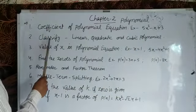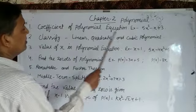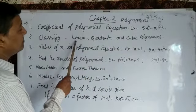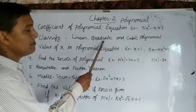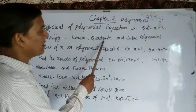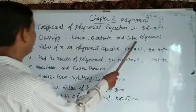In the second concept, classify linear, quadratic and cubic polynomial. We know that a polynomial which has maximum power 1 is called linear equation. Equation which has maximum power 2 is called quadratic equation. Equation which has maximum power 3 is called cubic polynomial.